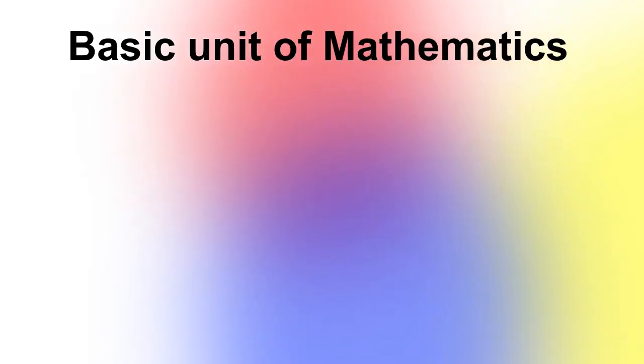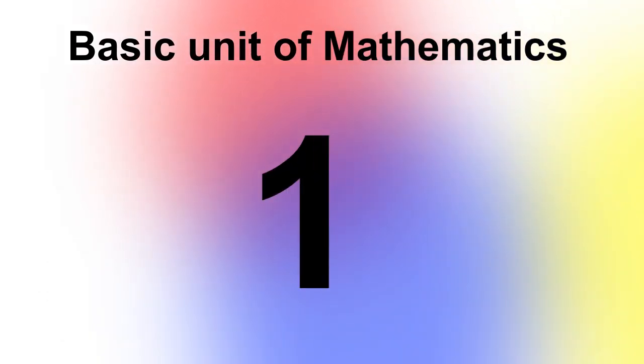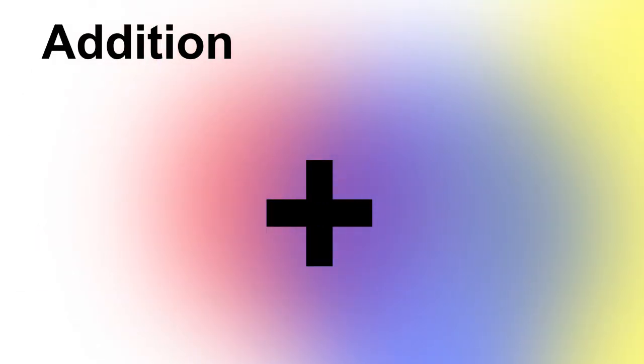To start off, we define our basic unit of mathematics as the number 1. Next, we define our first operation, addition. We can define all whole numbers in this way, and from addition we can get all of our digits.